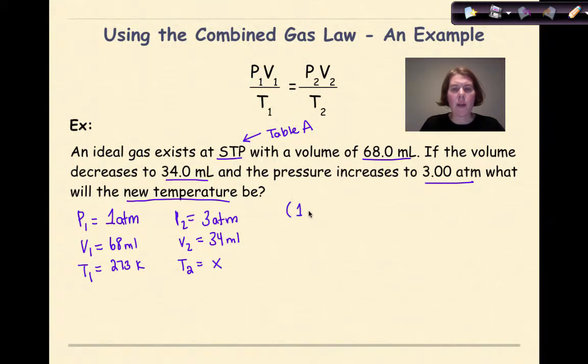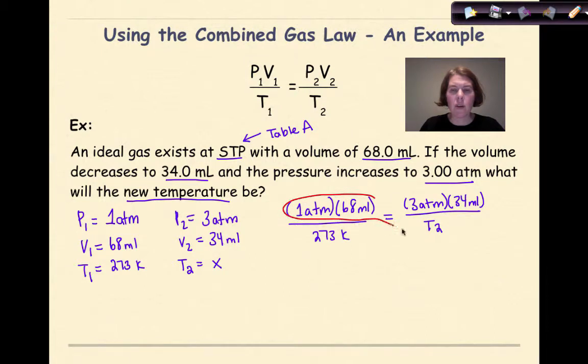So I'm going to have 1 atmosphere times a volume of 68 milliliters. I'm not going to worry about converting this into liters. As long as my units for volume stay constant, I'm not going to worry about it. So 1 atmosphere, 68 milliliters, over 273 kelvin. And then over on the other side, I'm going to have 3 atmospheres, 34 milliliters. And I'm going to be solving for T2, which is my X. Now what I want to do here is I want to cross multiply. So I'm going to be multiplying these two variables together, plus the T2. And then I'm going to multiply these three numbers together over here and set them equal to each other.